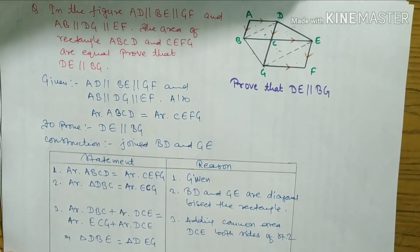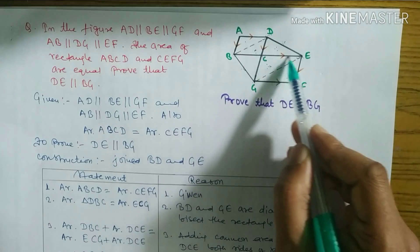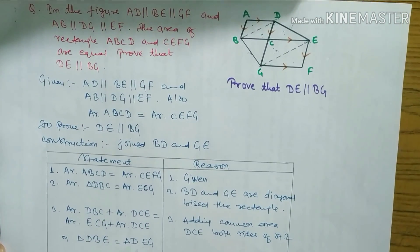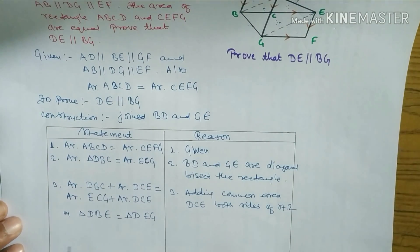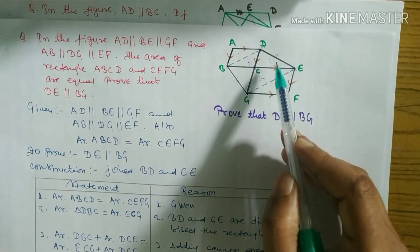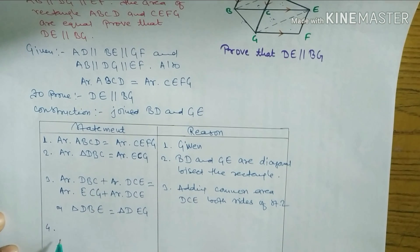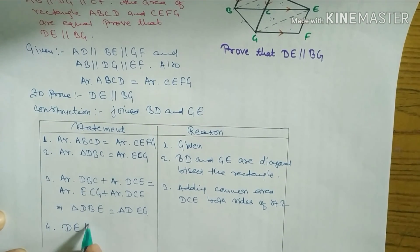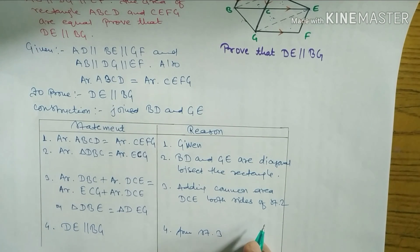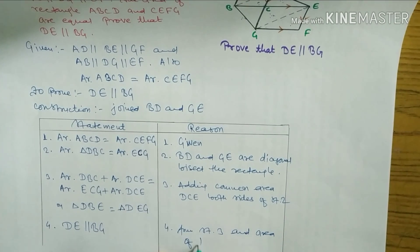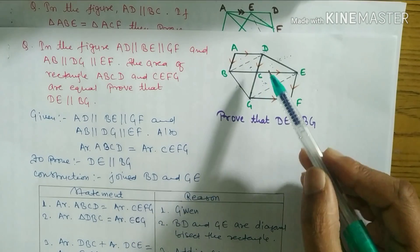Now look: this triangle and this triangle are equal — both triangles DBE and DEG are equal. If the areas of two triangles are equal and they stand on the same base between the same pair of parallel lines, then those lines are parallel. This is theorem number two. So in statement number four we write: DE is parallel to BG. Reason: from statement three, areas of triangles are equal, therefore opposite sides are parallel.